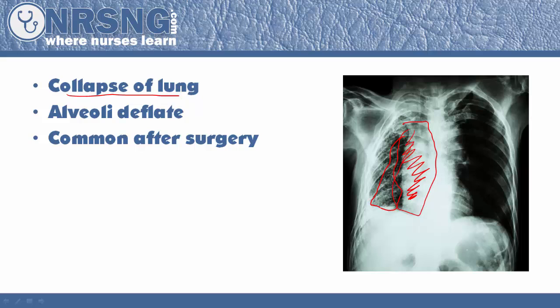So what happens is the alveoli deflate. What can happen is if the patient has excessive pulmonary secretions, or if there's any sort of damage to that area or obstruction, that can cause these alveoli to actually deflate. And as those little tiny alveoli deflate, this area of lung becomes deflated or collapses.